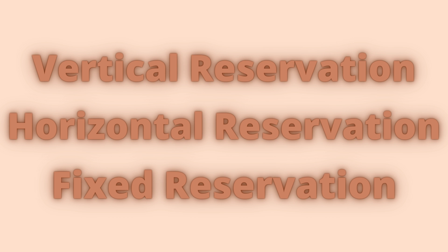Horizontal reservation refers to equal opportunity provided to other categories of beneficiaries such as women and individuals with disabilities, which are available under all vertical categories. For example, in case of female reservation, there will be 33% reservation each under OBC, SC, ST and unreserved categories. This type of reservation is also called inner reservation.